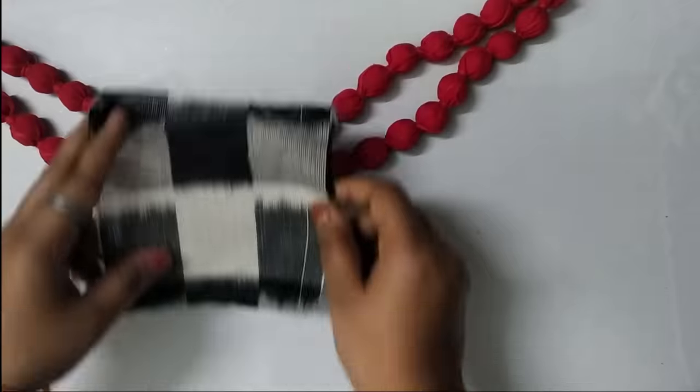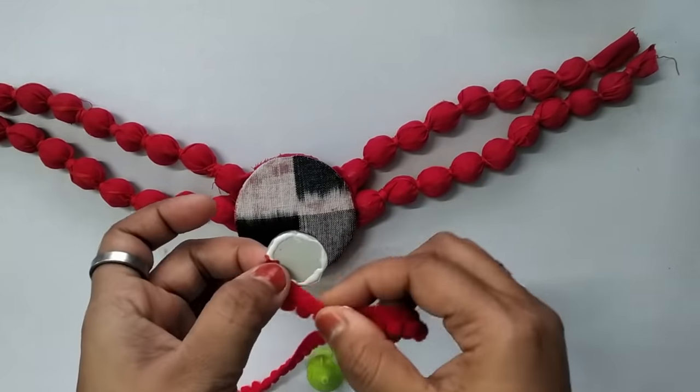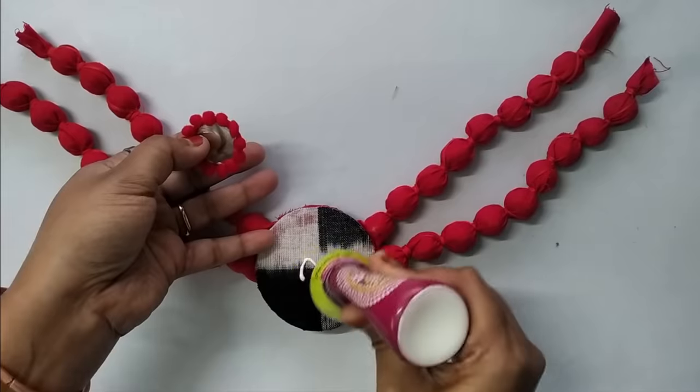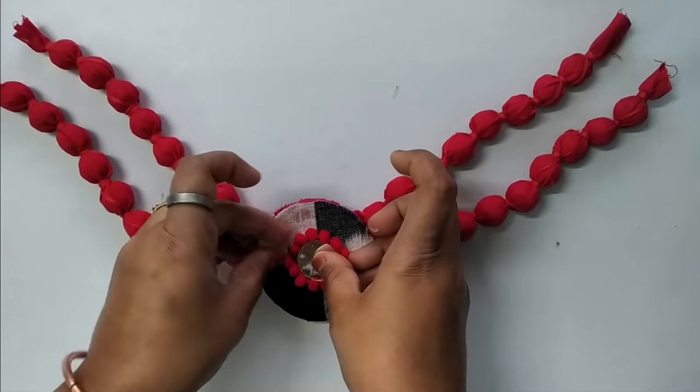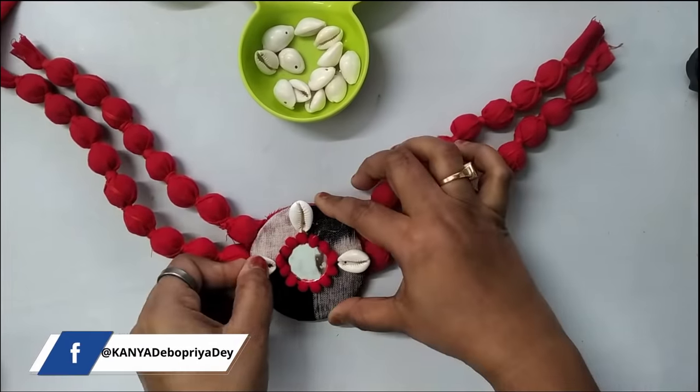Sticking this ikat fabric on the top, taking a big size mirror and sticking the pom pom lace around this. Now sticking them on the center of the pendant. Now I am adding a few kauri shells using glue gun.